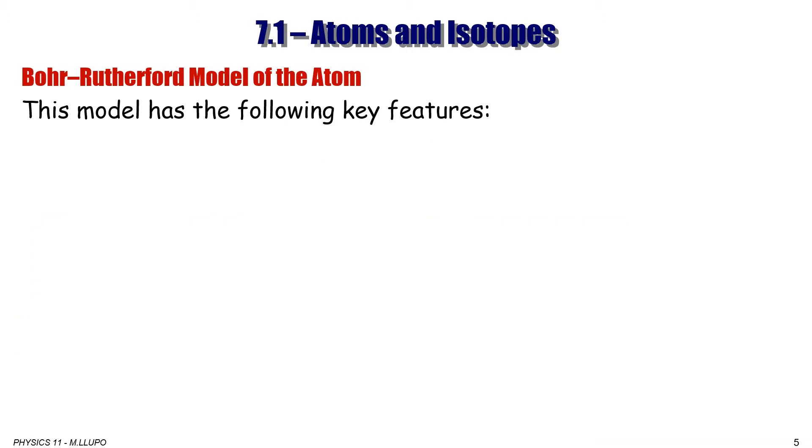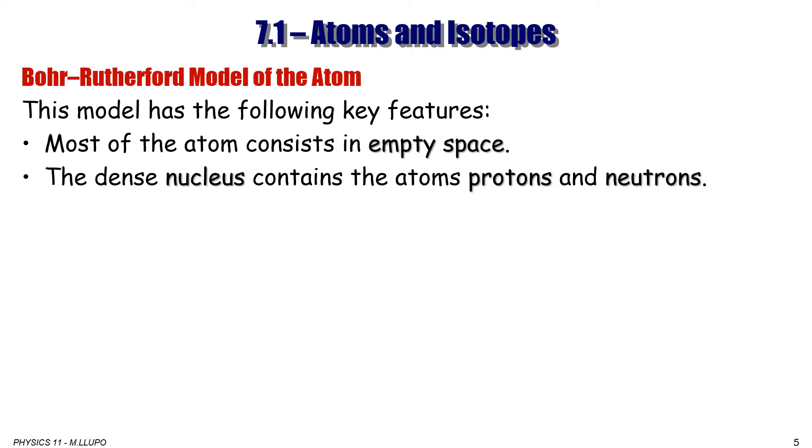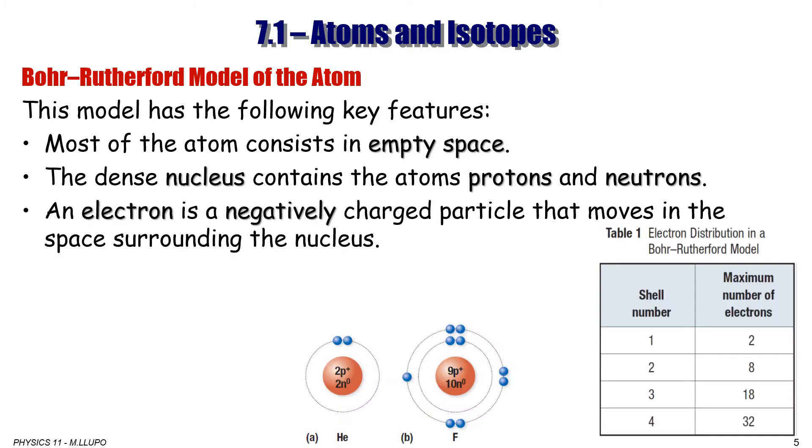Bohr's model of the atom is far from reality, however, it is simple and is good enough to explain the structure of the atom. That's what we use. This model has the following key features: Most of the atom consists of empty space. The dense nucleus contains the atom's protons and neutrons. An electron is a negatively charged particle that moves in a space surrounding the nucleus, what we call energy level or shells.